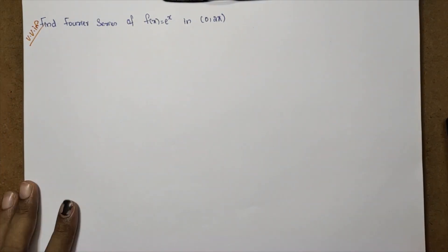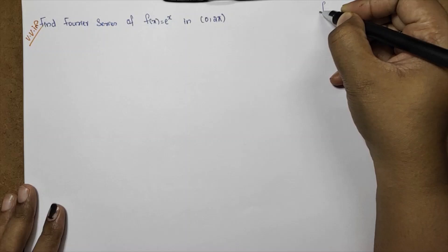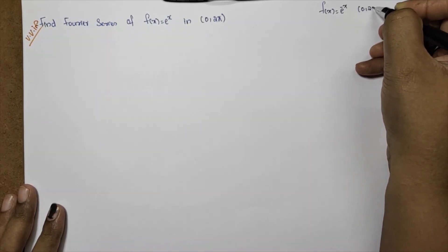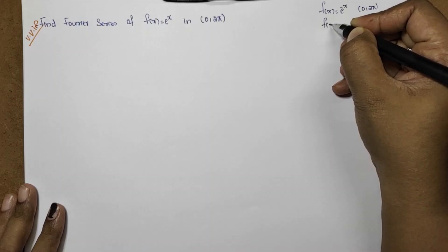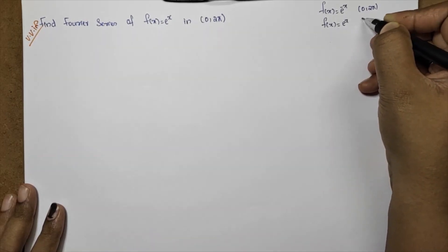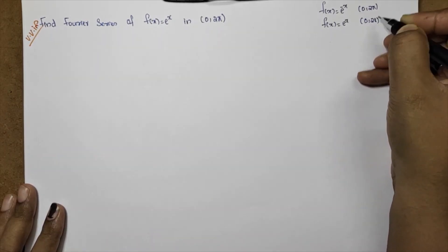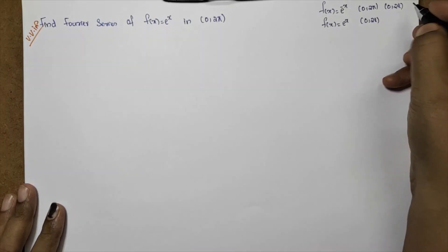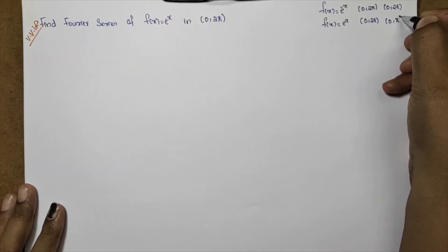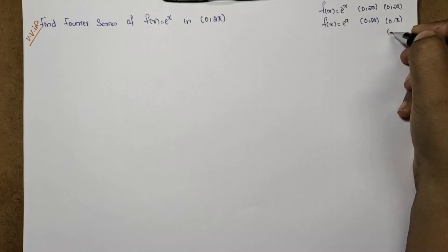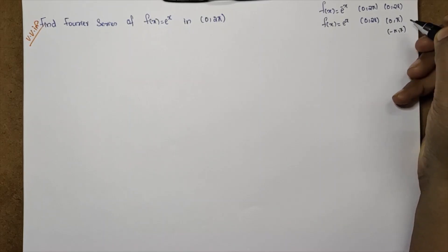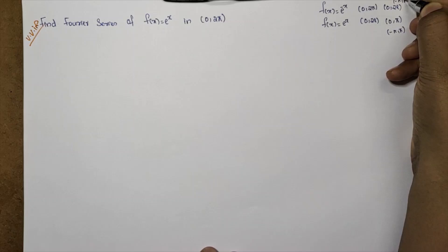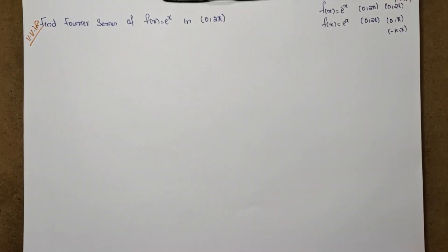We have studied f(x) equal to e raised to x in the interval 0 to 2π. Also, f(x) equal to e raised to x with a half-range cosine series, and e raised to minus x in the interval minus π to π. These intervals are very different.